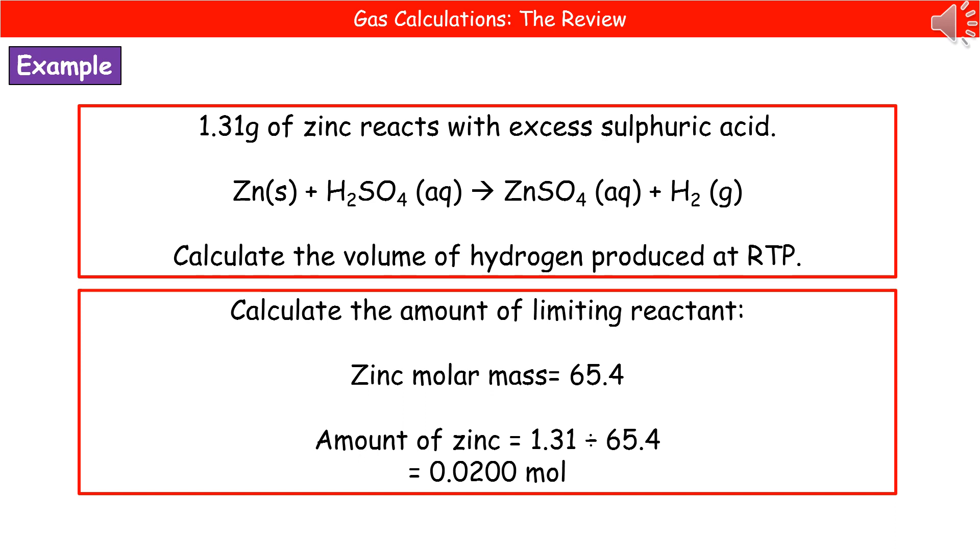The first step is to calculate the amount of our limiting reactant. In the question it tells us that we have an excess of sulfuric acid, therefore the limiting reactant must be zinc. If we look up zinc on the periodic table, which is on that data sheet if you flip it over, you'll see it in the exam, it has a molar mass of 65.4. We've got 1.31 grams of zinc in our actual experiment, so to work out the amount of zinc it's 1.31 divided by 65.4, which gives us 0.0200 moles.